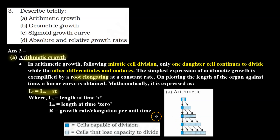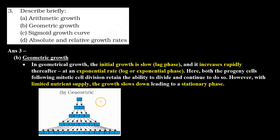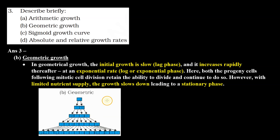Then in B part, we will discuss geometric growth. In geometric growth, when there is mitotic division, two new daughter cells are formed and both will show further division. As you can see in this diagram, one cell undergoes mitosis and there are two new cells — both cells can show further division and produce new cells. This is called geometric growth.